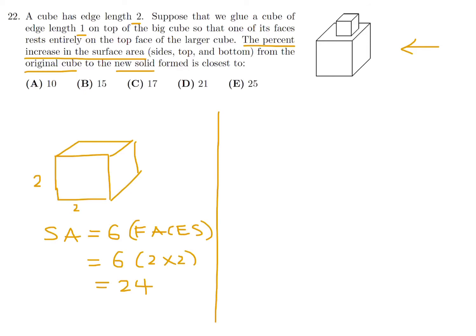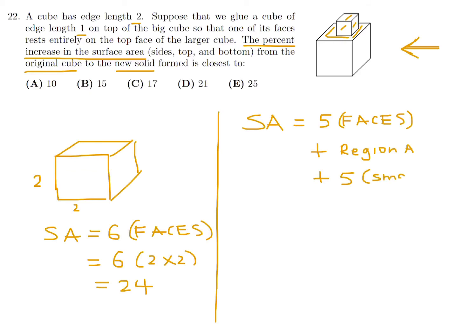Now we've got this new shape. Of the six faces of the big cube, five are not affected by the tiny cube placed on top. So the surface area of the new solid will be five times the unaffected faces, plus region A — the exposed top area — plus five faces of the small cube.